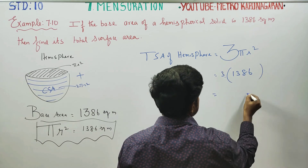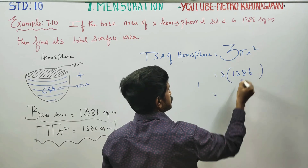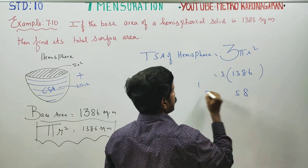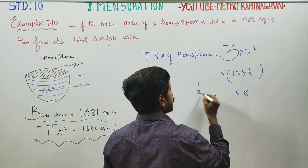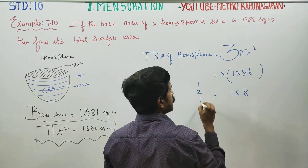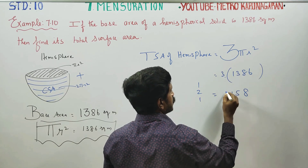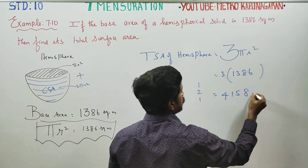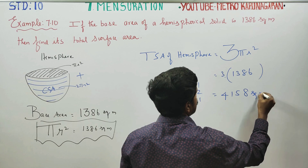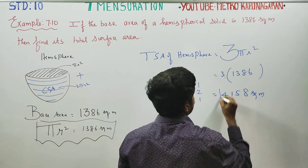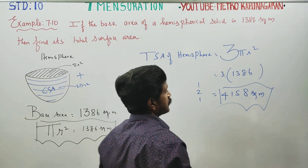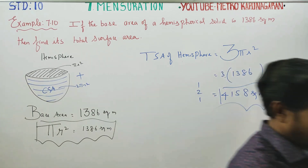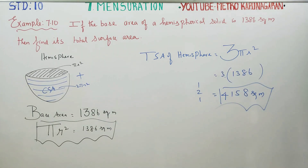Calculating: 3 times 1386. 6 times 3 is 18, carry 1. 8 times 3 is 24, plus 1 is 25, carry 2. 3 times 3 is 9, plus 2 is 11, carry 1. 3 times 1 is 3, plus 1 is 4. The total surface area is 4158 square meters. Thank you.